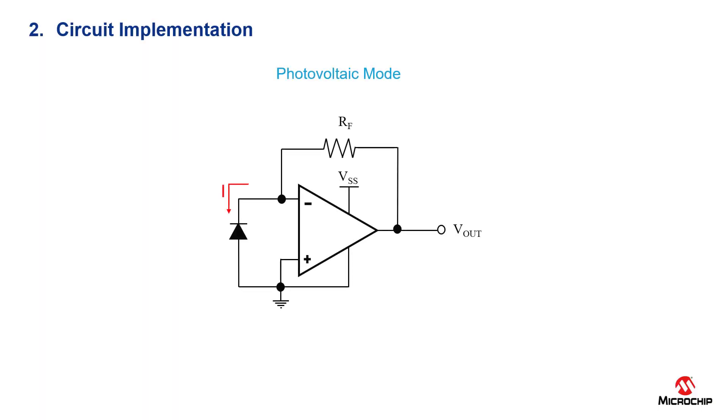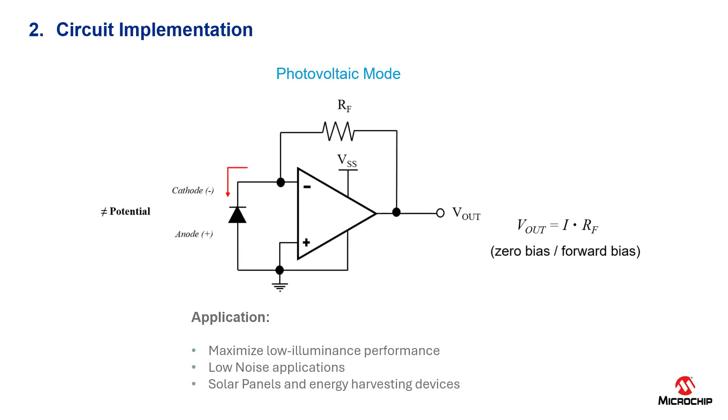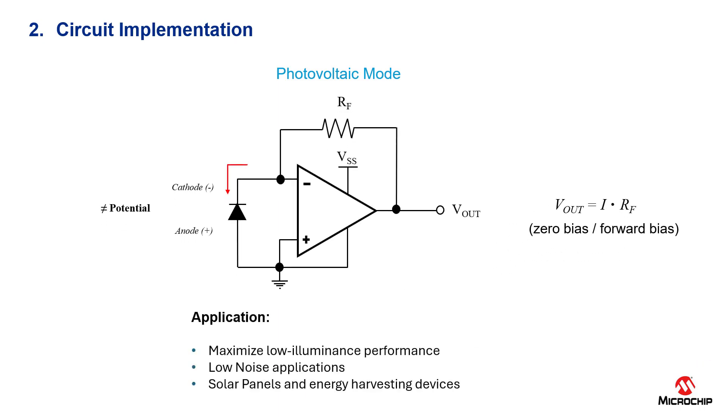Now for the second circuit implementation, we're going to use the photovoltaic mode. In photovoltaic mode, the photodiode is at zero bias. This means that the circuitry keeps the anode and the cathode at the same potential. A typical application for this type of circuitry will be to maximize low illuminance performance, low noise applications, solar panels, and energy harvesting devices.